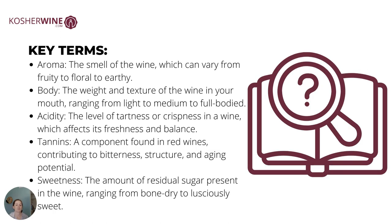Some key terms you might want to know and hear us talk about: aromas — that's the smell of the wine. We have that aroma wheel as a handy guide. These can vary from fruity to floral to earthy. Then of course, the body of a wine. This one's tricky and we'll go more in depth, but really it's the weight and texture of the wine in your mouth. Think about sipping skim milk versus 2% or whole milk and how that feels — that's how we range wines from light to medium to full body.